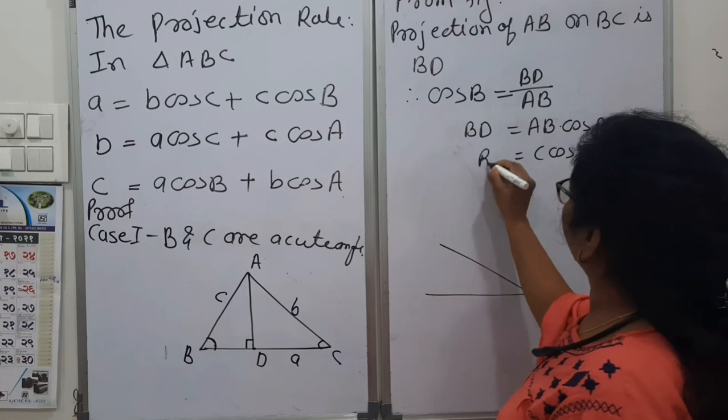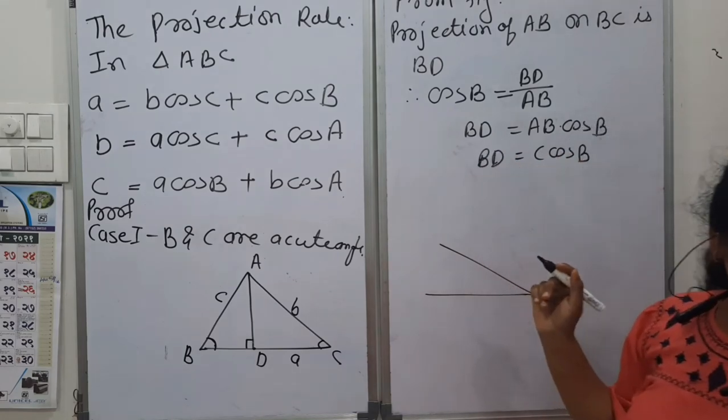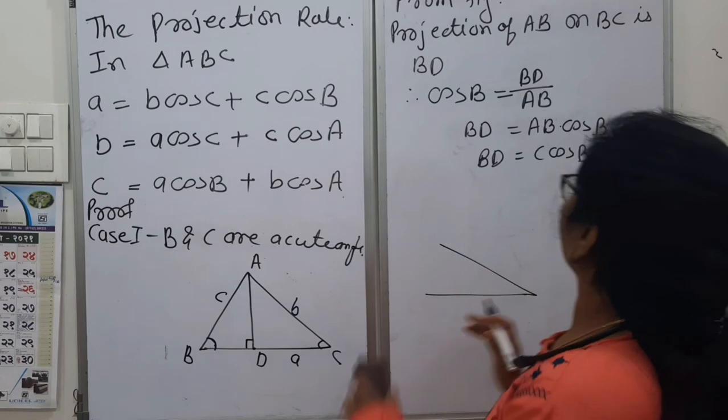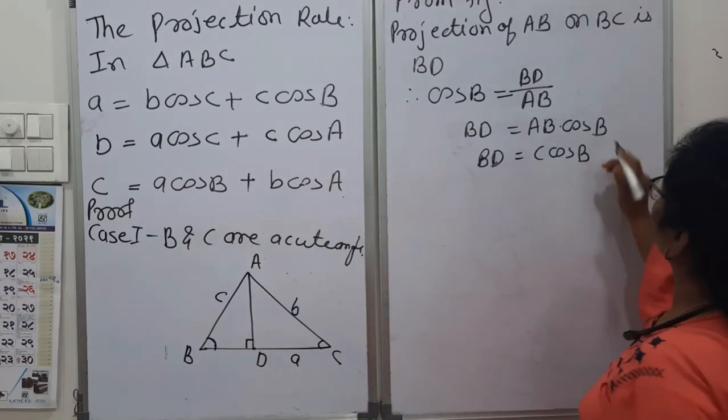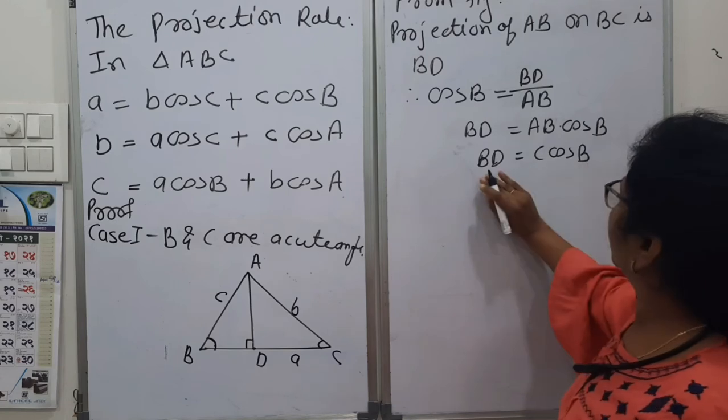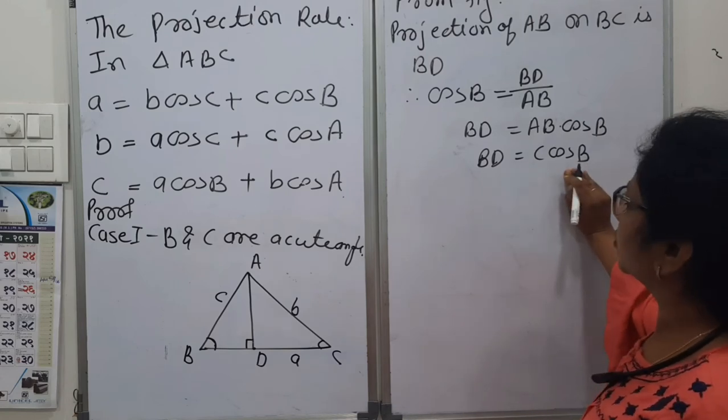So the value of BD, the length BD is c cos B. Therefore, the length BD is c cos B.